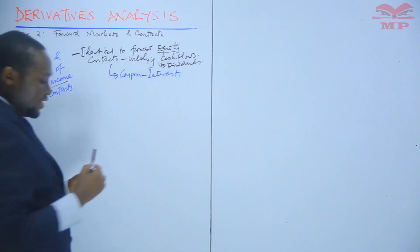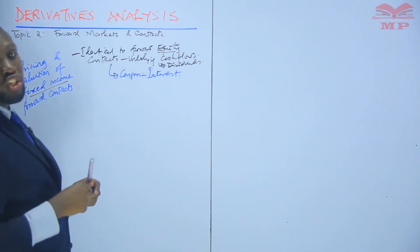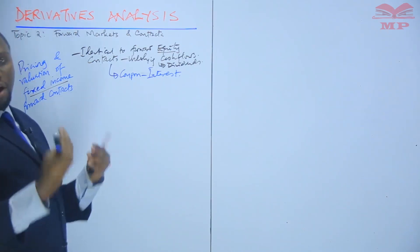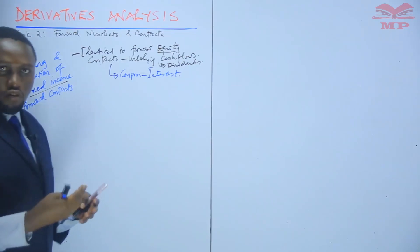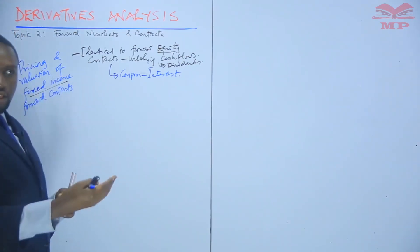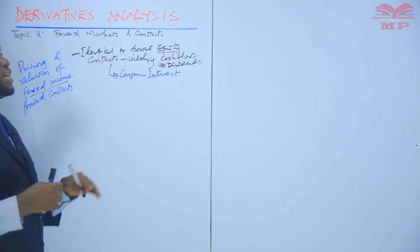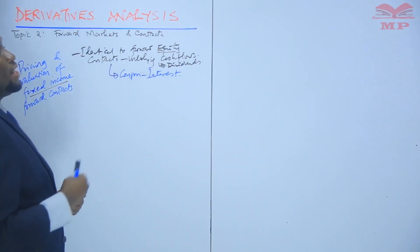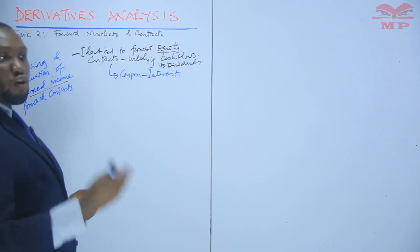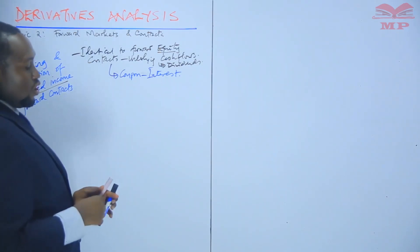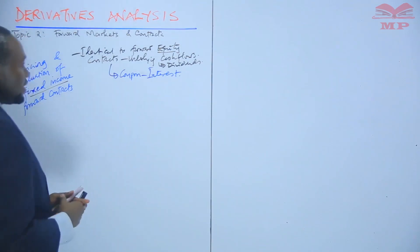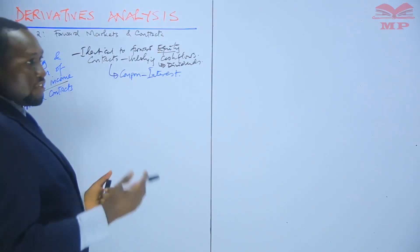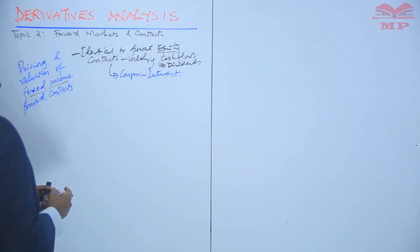A fixed income instrument is one in which an issuer, who is a borrower, promises to pay back the par value to the investor or the bond holder. And in between the date to maturity, he is paying coupons — that is a coupon-paying bond. The other type is a zero-coupon bond, which we had discussed earlier in fixed income investment analysis.